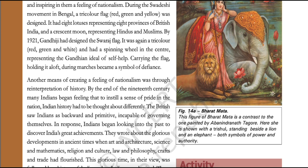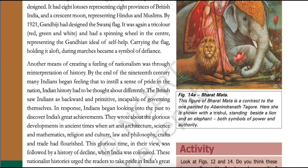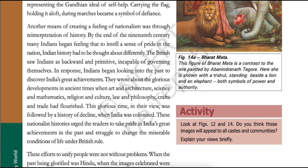As the national movement developed, nationalist leaders became more and more aware of such icons and symbols in unifying people and inspiring in them a feeling of nationalism. During the Swadeshi movement in Bengal, a tricolour flag was designed — it had eight lotuses representing eight provinces of British India and a crescent moon representing Hindus and Muslims. By 1921, Gandhiji had designed the Swaraj flag — again a tricolour of red, green and white, with a spinning wheel in the centre representing the Gandhian ideal of self-help. Carrying the flag and holding it aloft during marches became a symbol of defiance.